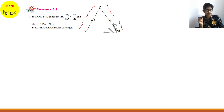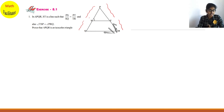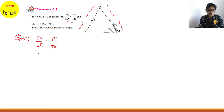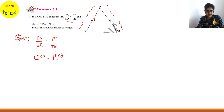Do you remember the converse of BPT — the basic proportionality theorem? So line ST is dividing the two sides of the triangle in the equal ratio. PS/SQ = PT/TR — that is the first given condition. Also it is given that angle TSP equals angle PRQ. So these two angles are equal — that is the second given condition.